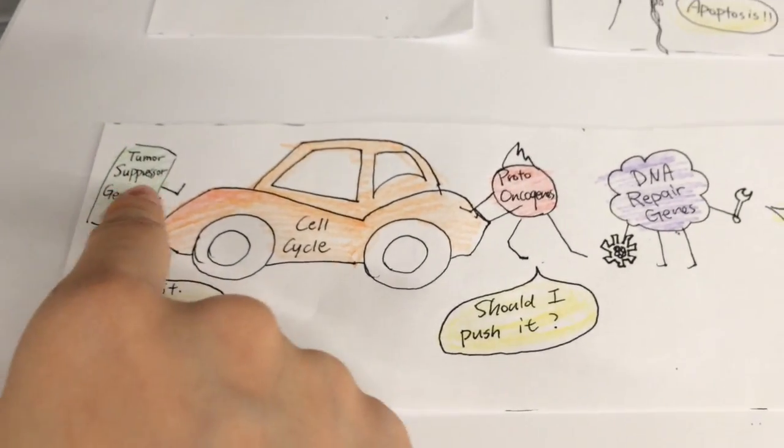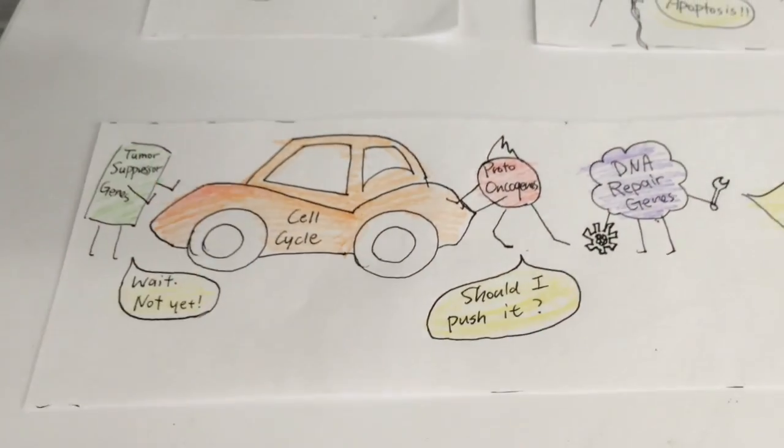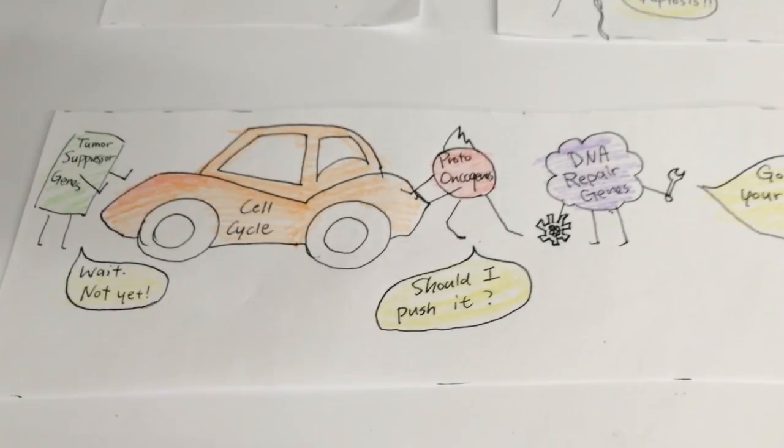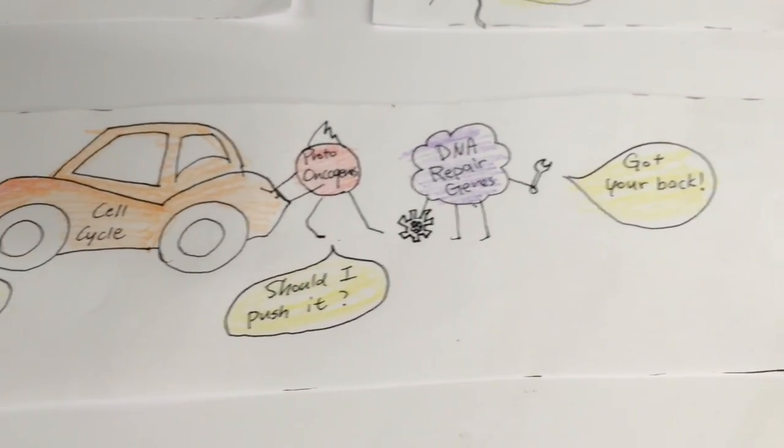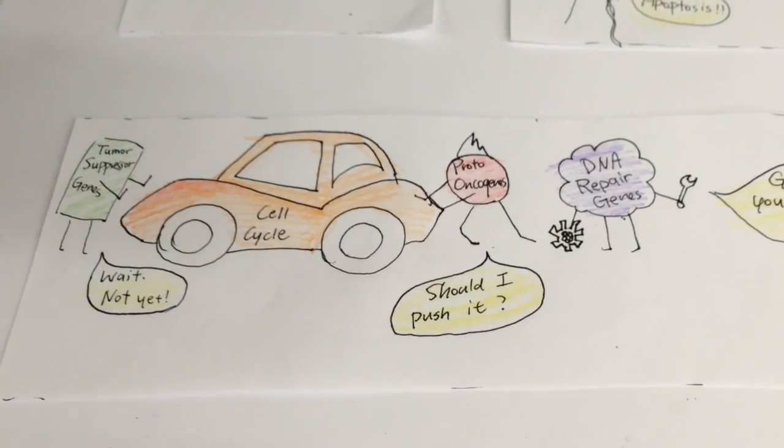A tumor suppressor gene is like a brake that slows down the rate of cell division. A DNA repair gene repairs errors in DNA copying to prevent mutations.